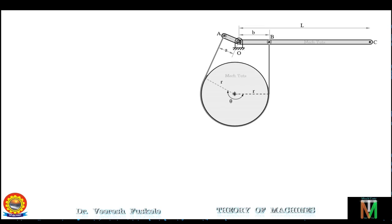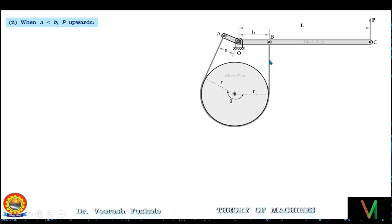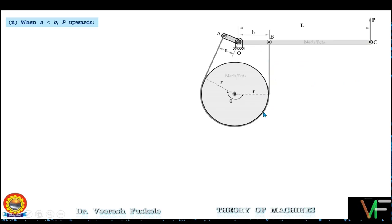The second configuration is when distance a is less than b and force is applied in the upward direction on the lever. If force P is applied upward, that portion of the band will be lifted upwards, the band will be tightened, and the brake will not be applied. If force is applied downward in this configuration, the band will be loosened and the brake will not be applied.